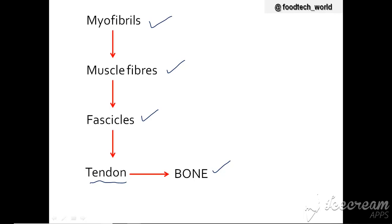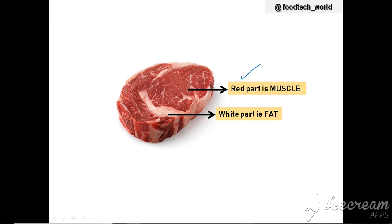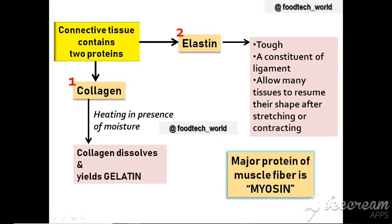This is a piece of meat — the darker red part is muscle and the white part is fat. The connective tissues like perimysium and endomysium in skeletal muscle contain two types of proteins: collagen and elastin. When collagen is heated in the presence of moisture, it dissolves and yields gelatin, which is used as a gelling agent in foods, medications, and vitamin capsules. Elastin is a tough ligament with elastic properties that allows tissues to resume their shape after stretching or contraction.